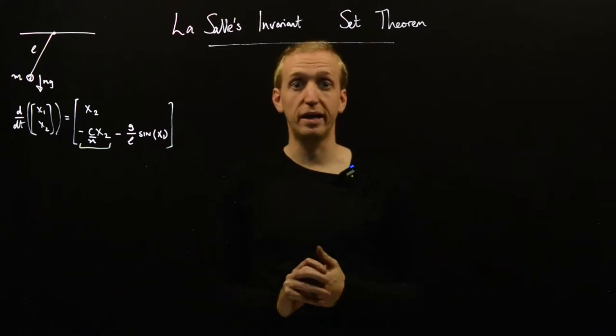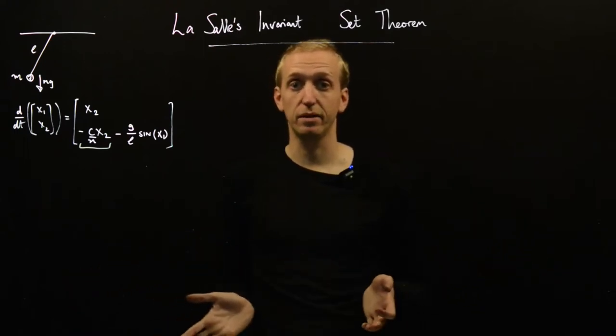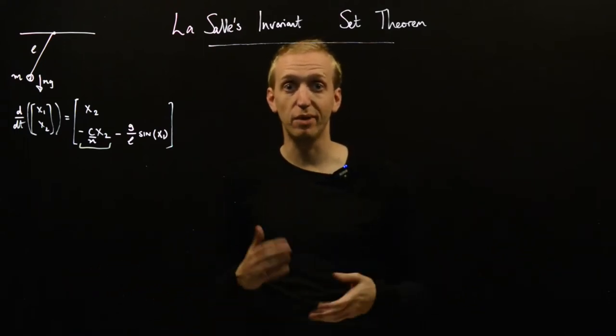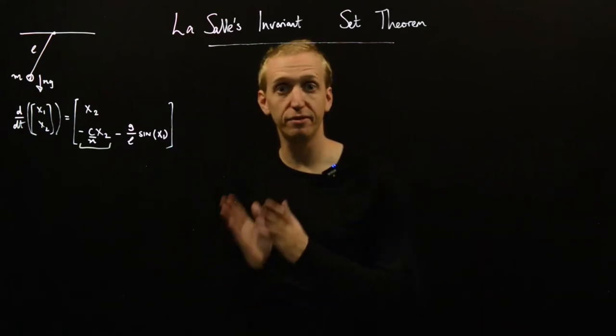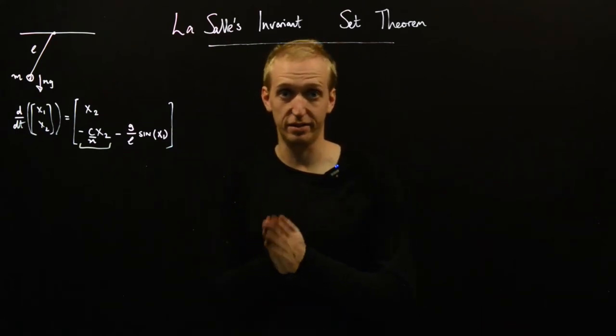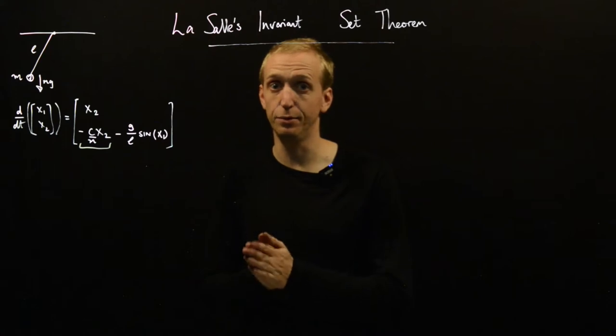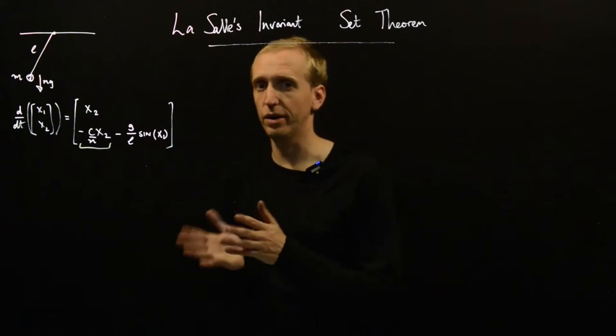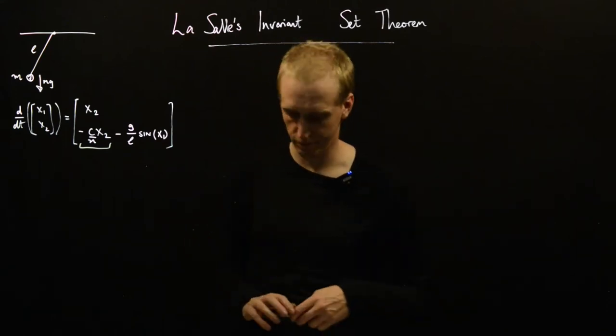And we're now just going to try and run our Lyapunov theorem arguments and try and prove that V dot is strictly less than zero. Remember, that's what we needed to prove asymptotic stability. And we're going to run into a little bit of trouble, as you're about to see.